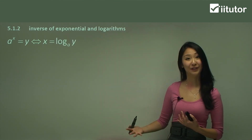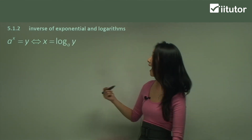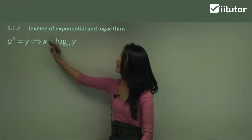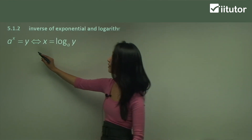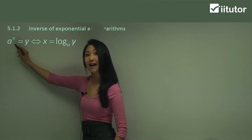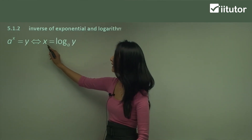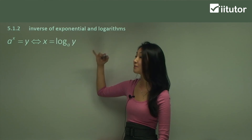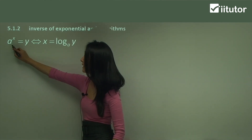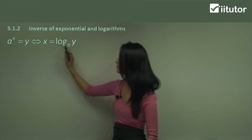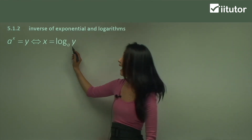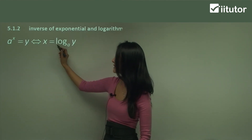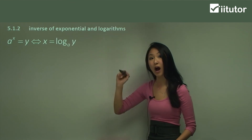Remember back to our logarithms, where if we have a to the power of x equals y, we can find x by making it x equals log base a of y. The base of the index becomes the base of the log, and the index is what we're finding — that's why it becomes x equals log base a of y.